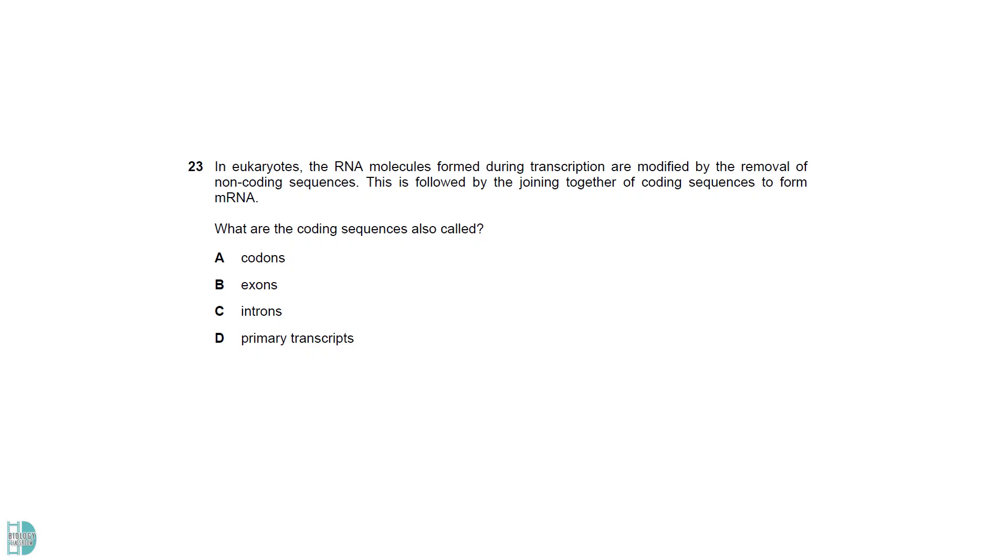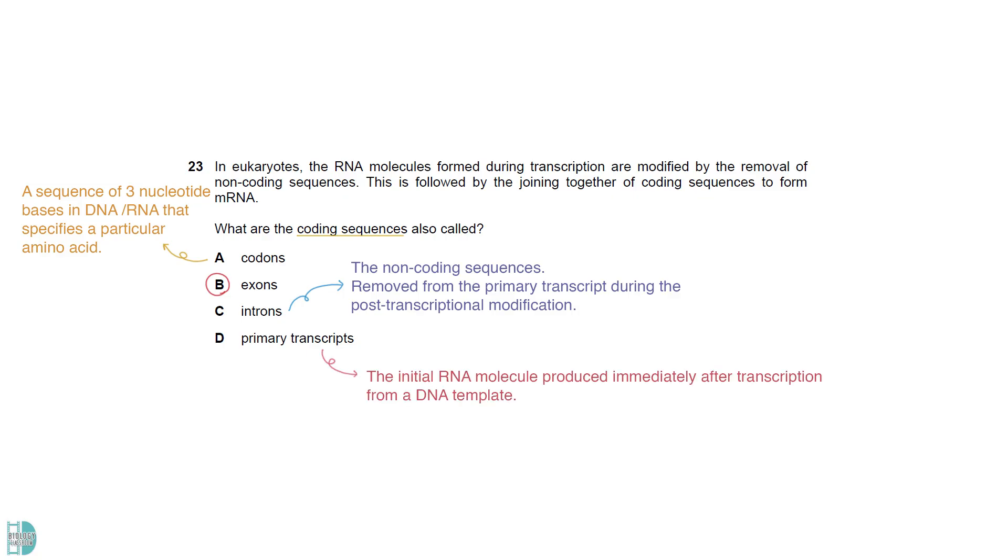The coding sequences are called exons. A codon is a sequence of three nucleotide bases in DNA or RNA that specifies a particular amino acid. Introns are the non-coding sequences that will be removed from the primary transcript during the post-transcriptional modification. A primary transcript is the initial RNA molecule produced immediately after transcription from a DNA template. It is the unprocessed RNA molecule that contains both exons and introns.